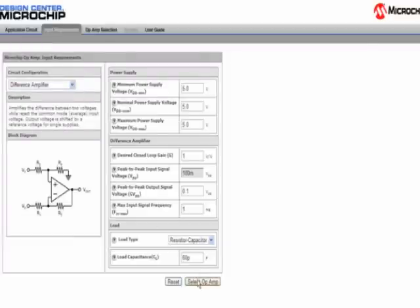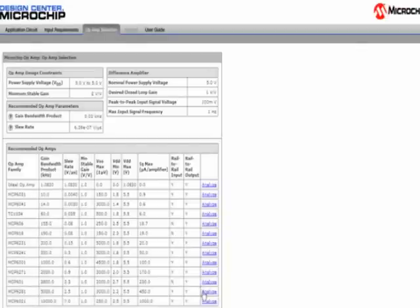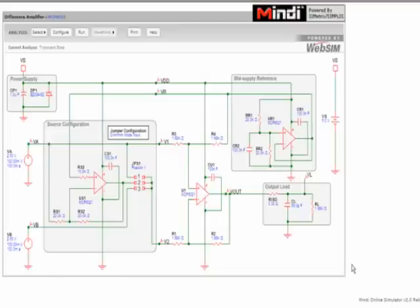Next we need to select the op-amp to evaluate its performance. We will evaluate the 10 MHz Low Offset Voltage MCP6021. To evaluate this part number, we click on the Analyze link corresponding to the MCP6021.